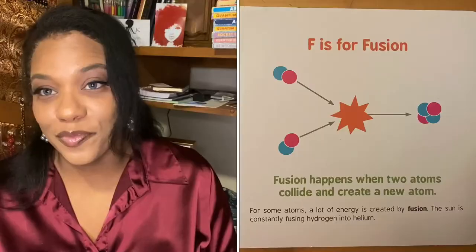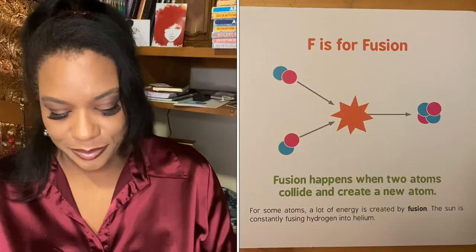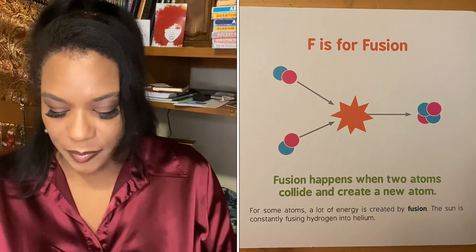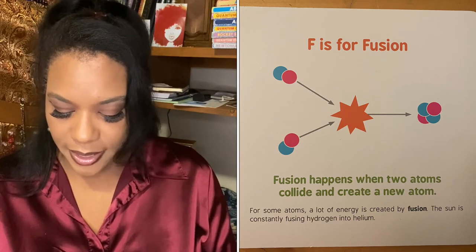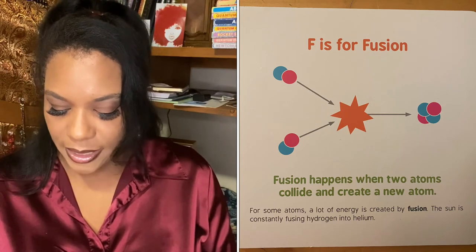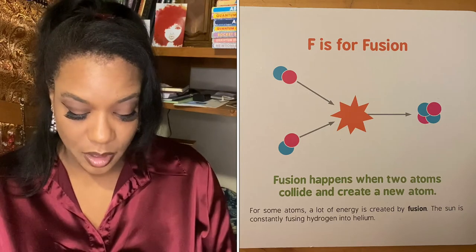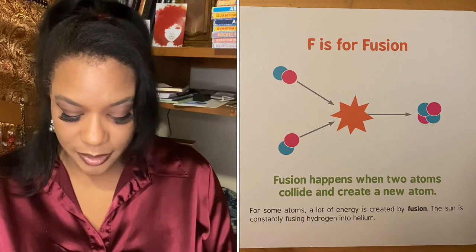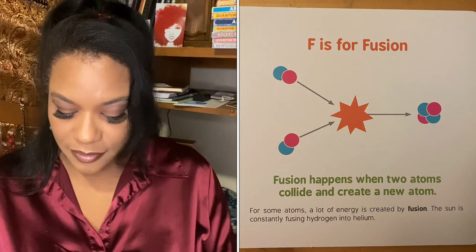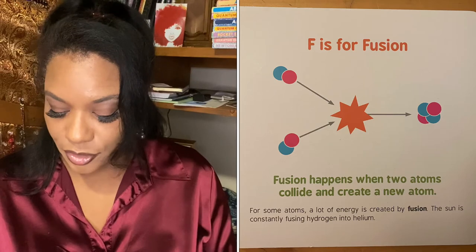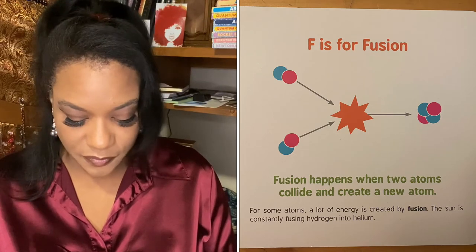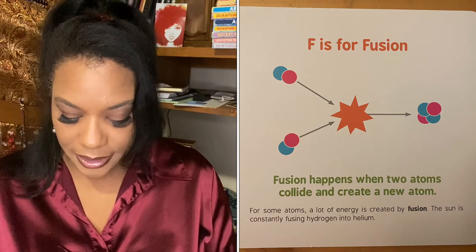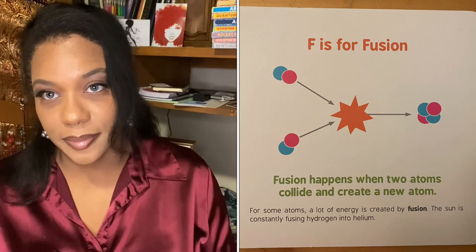F is for fusion. Fusion happens when two atoms collide and create a new atom. For some atoms, a lot of energy is created by fusion. The sun is constantly fusing hydrogen into helium.